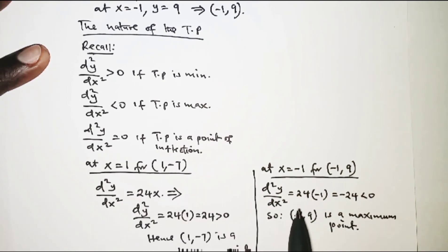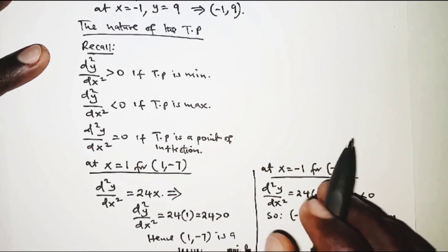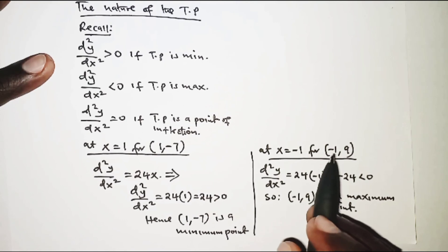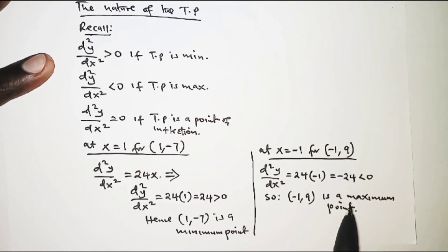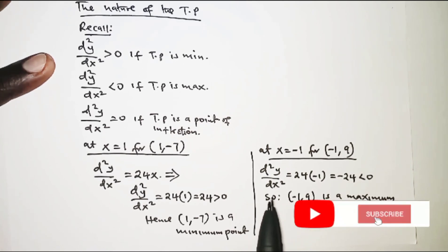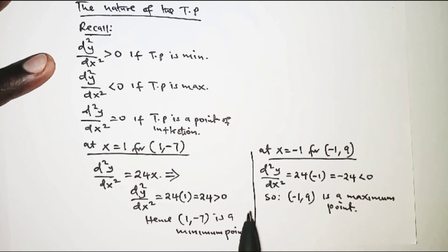That is it for this question. So (1, -7) is a minimum point, and (-1, 9) is a maximum point. Thank you for your patience, thank you for watching, see you in the next video.